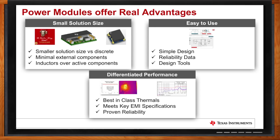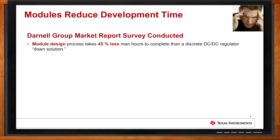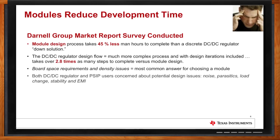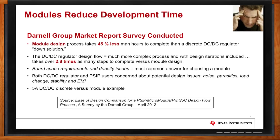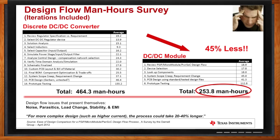How much can I expect to save in my project schedule from using power modules? It varies from product to product and from user to user. Darnell, back in April of 2012, issued a report saying it's typically 45% less man-hours to do a DC-to-DC regulator using a power module versus a discrete design. This slide shows the breakdown of the difference in time and number of steps when developing with a power module.